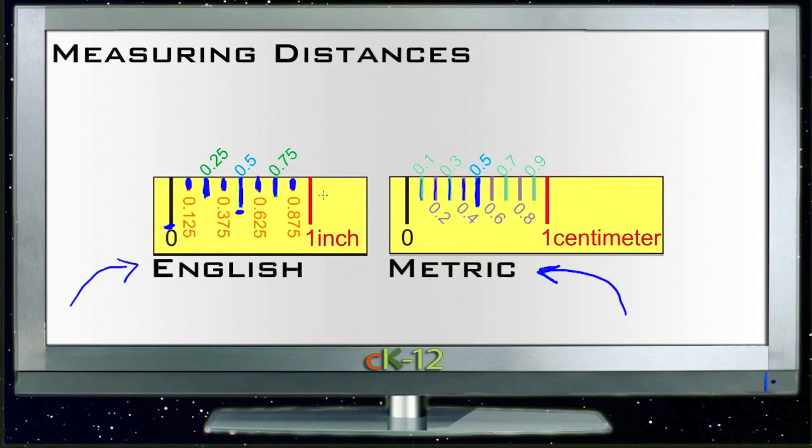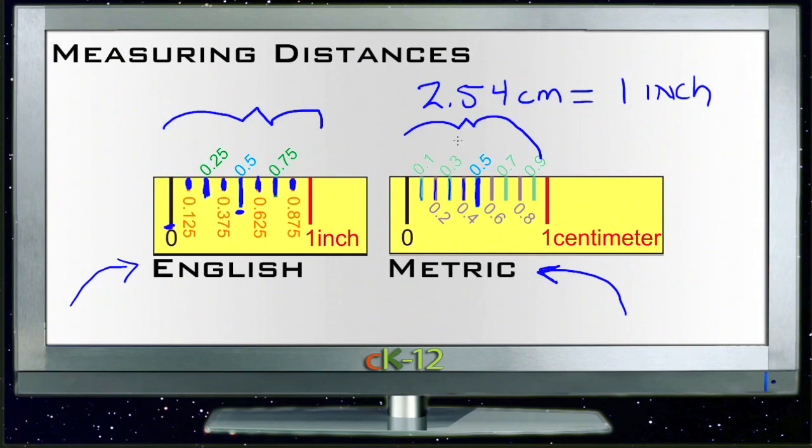Now for comparison, if this were drawn to scale, the English inch over here compared to the centimeter over here—it takes about 2.54 centimeters to equal one inch. So this one here is about a little less than one half of this one lengthwise, just for comparison.